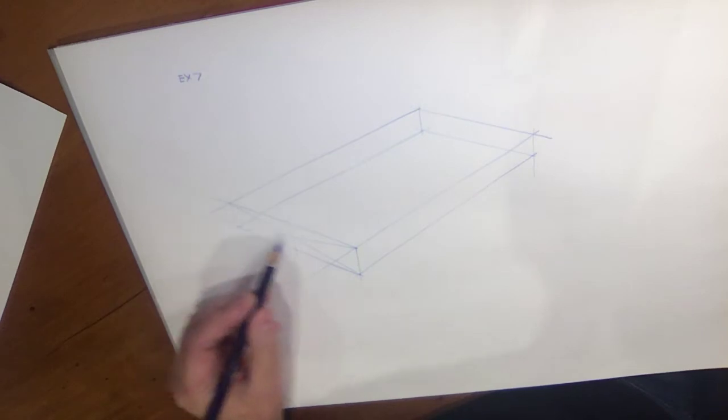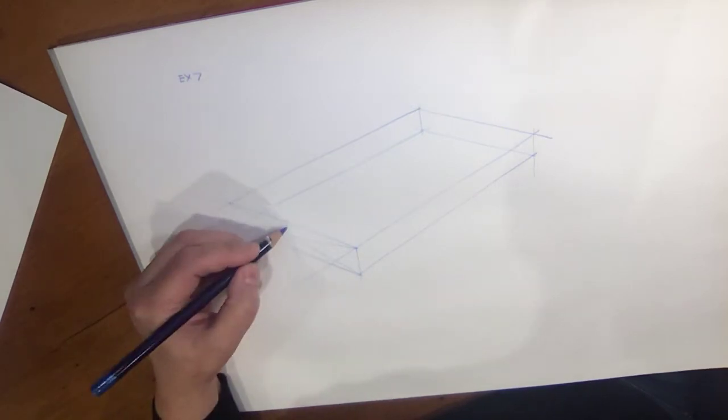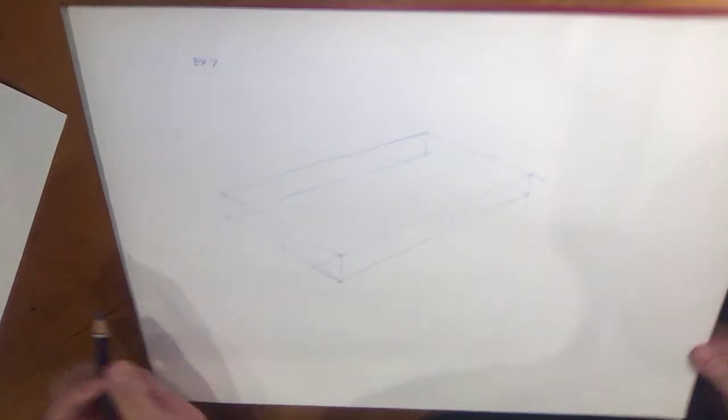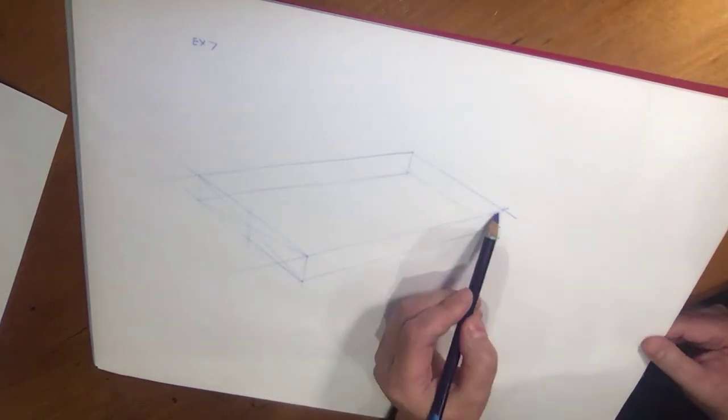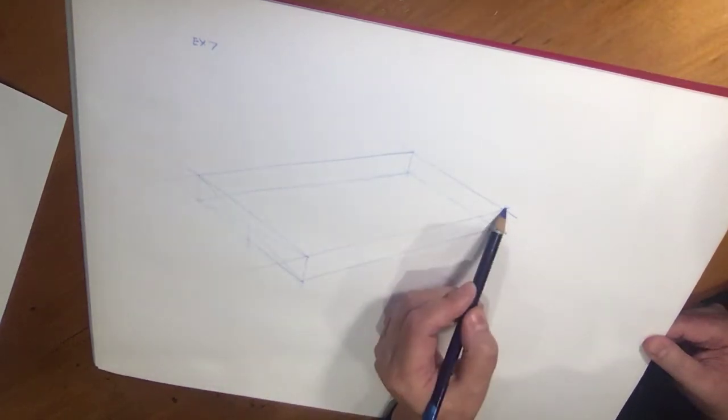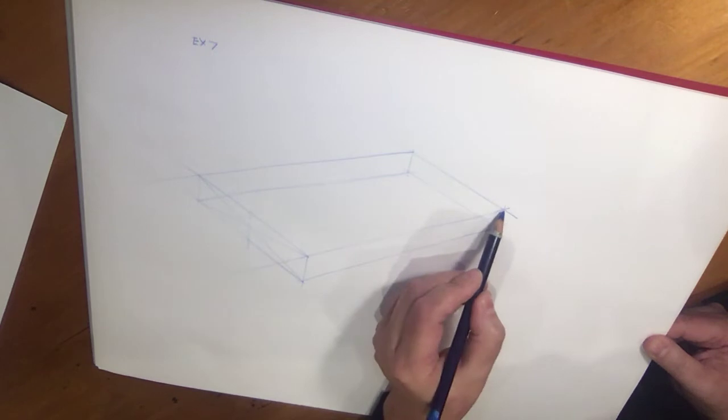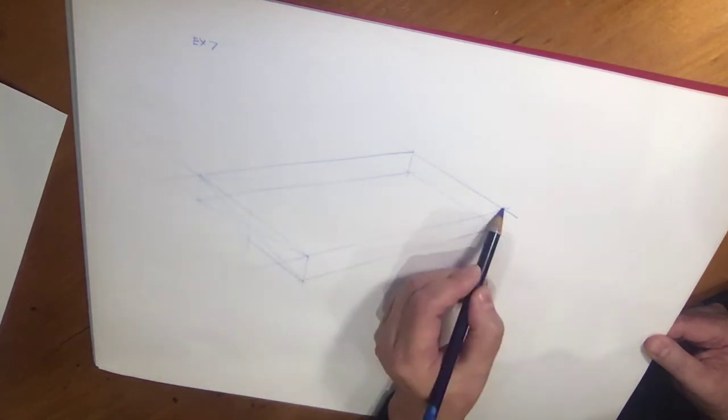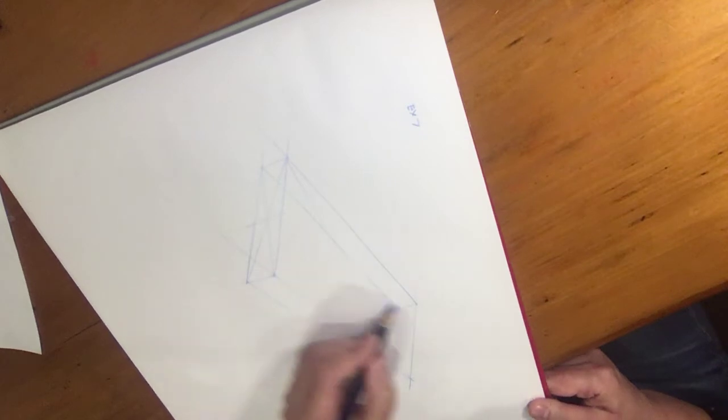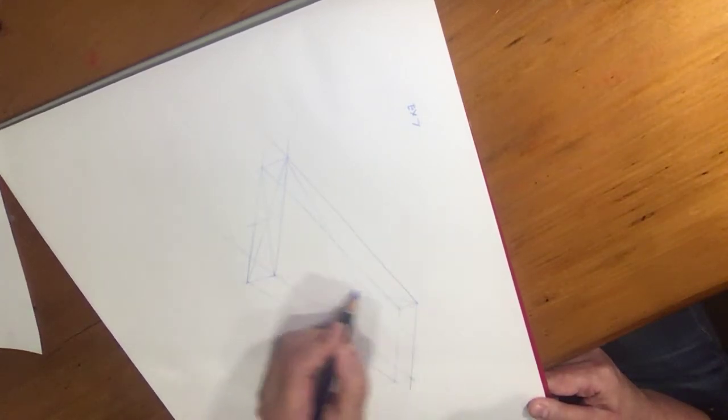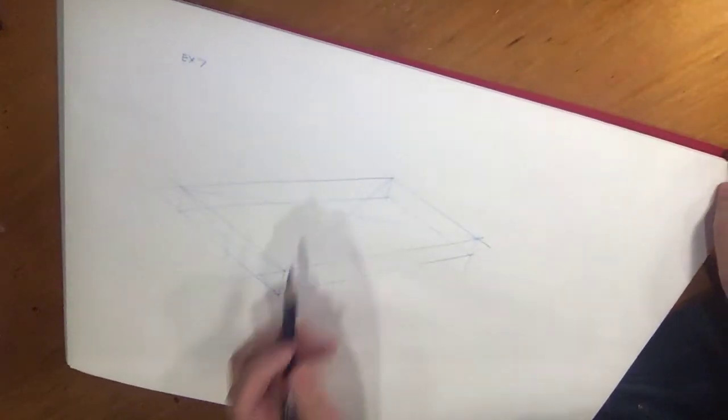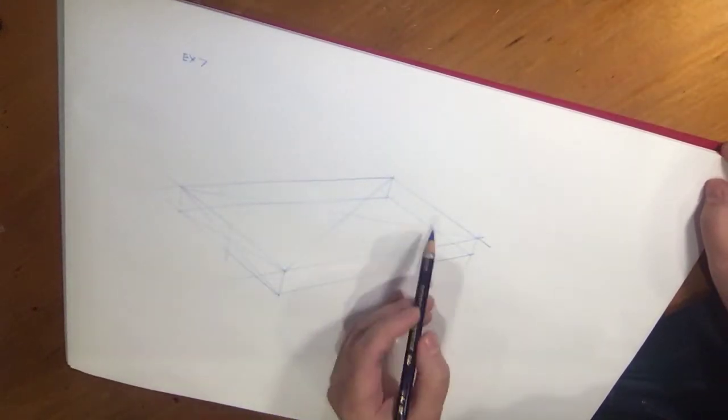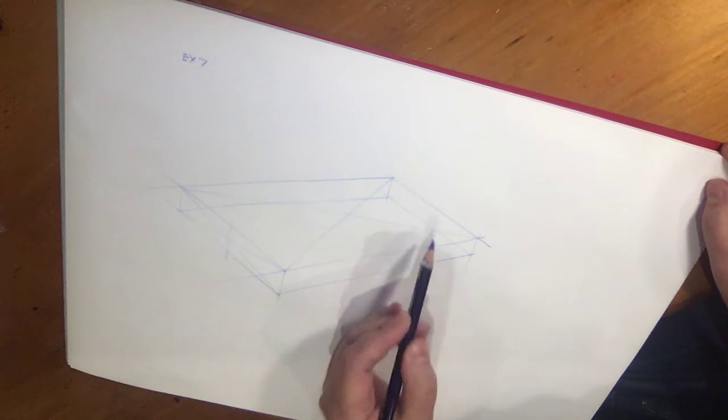Remembering that all of these vertical lines are running parallel to one another, I'm going to create a midpoint on this top surface. And where I have that midpoint, I want to have a line in perspective.